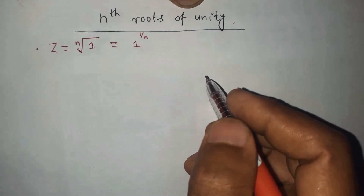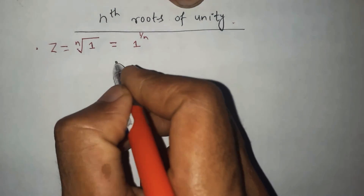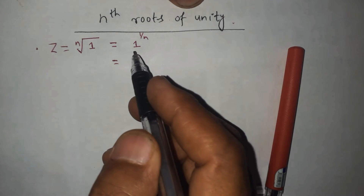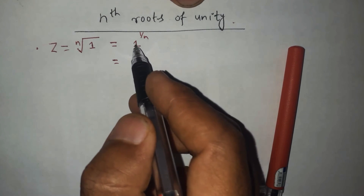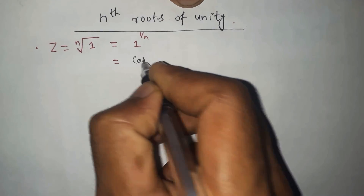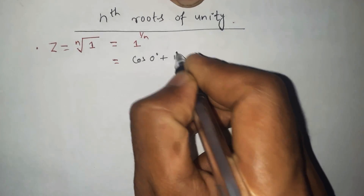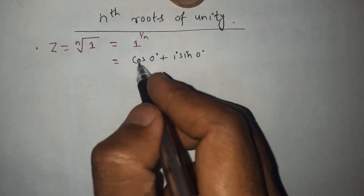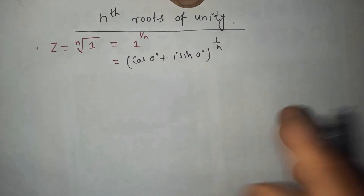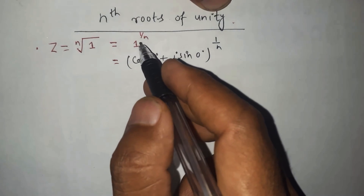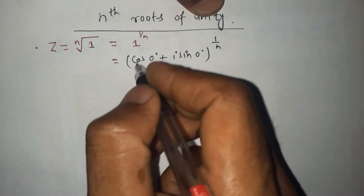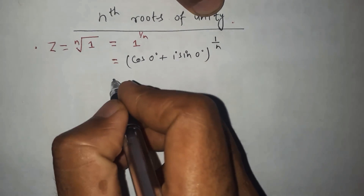Now let's change this 1 into the polar representation. We can change the rectangular representation of the complex number into the polar representation. The polar form of 1 is cos 0° plus i·sin 0°. This is the polar representation of 1, raised to the power of 1 over n.